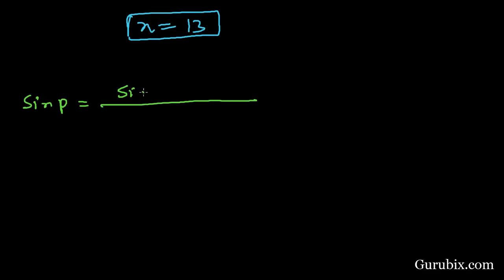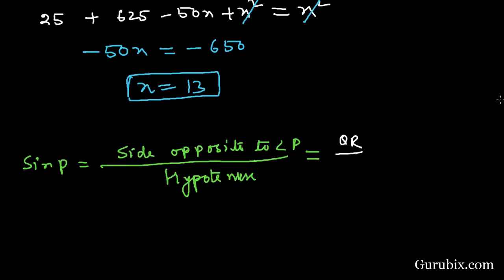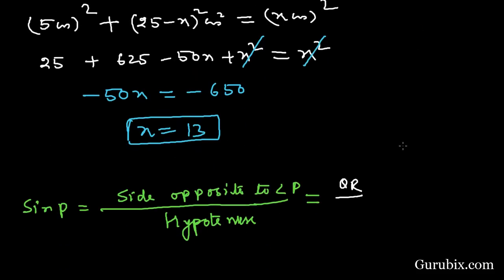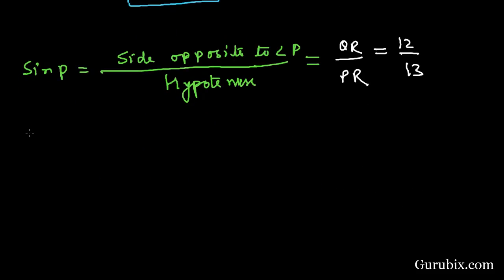The side opposite to angle P over hypotenuse, and side opposite to angle P is QR, hypotenuse is PR. The side opposite to angle P is equal to 12 over 13.